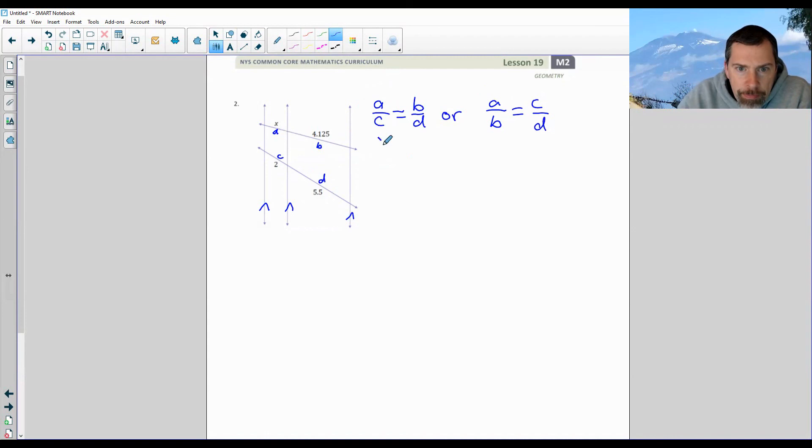So I'll substitute in my A, substitute in my C. B is 4.125, 4 and 1/8, and D is 5 and 1/2. Over here, it would be A over B equals C over D. So see how the setup is different, x over 2 here, x over 4.125, 4.125 over 5.5, 2 over 5.5. So the numerator, denominator became numerator, numerator. Numerator, denominator became denominator, denominator. Either way, it does not matter which way you set these up. I'll solve both ways.